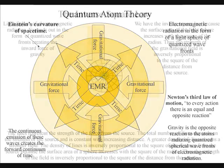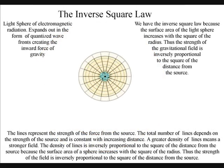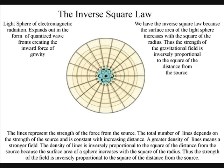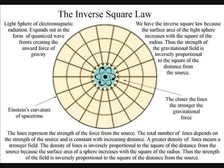We have the inverse square law, because the surface area of the light sphere increases with the square of the radius. Thus the strength of the gravitational field is inversely proportional to the square of the distance from the source.